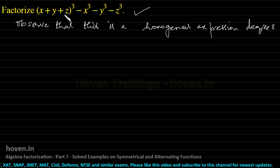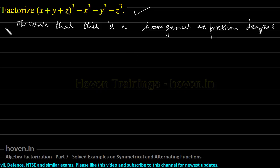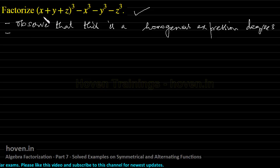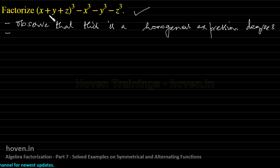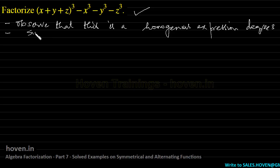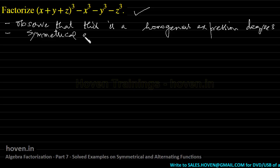This is also cubed, these are linear cubed — degree 3, 3, 3, and 3. And we also observe that this is a symmetrical function, because if we interchange x and y, the result remains the same. If we write y in place of x, this becomes y + x, and this becomes minus y³ minus x³ — the value of the expression remains unchanged. So at the outset, we can write that it is a symmetrical expression.